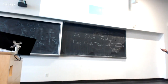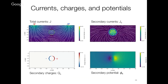So we have total currents going in, the cylinder gives us a negative charge on one side and a positive charge on the other. Here's what the charges look like, and here's what the secondary potentials look like.